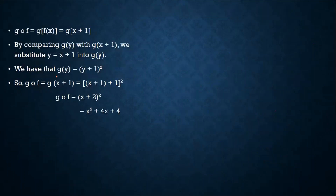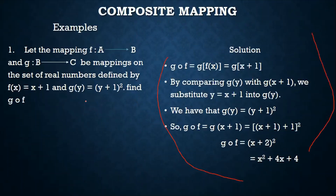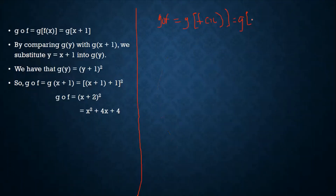To find g of f, we can write g of f as g(f(x)). Now, what is the formula for f(x)? According to the question, f(x) = x + 1. So we substitute x + 1 into our formula, giving us g(x + 1).